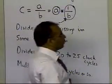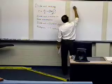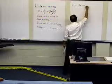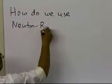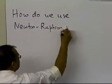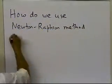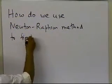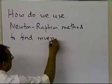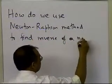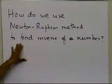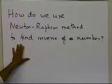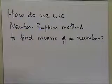So the question is: how do we use Newton-Raphson method to find the inverse of a number? Because that's what it means — if you are able to find out the inverse of a number, you should be able to take that inverse of a number, multiply it to the numerator, and then that means that you will be able to divide one number by another one.